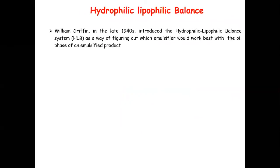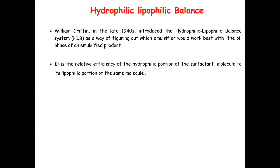Hydrophilic-lipophilic balance was first introduced by scientist William Griffin in the late 1940s as a way of figuring out which emulsifier would work for the oil phase of an emulsified product. It is the relative efficiency of the hydrophilic portion of a surfactant molecule to its lipophilic portion — how much hydrophilic groups and how much lipophilic groups are there. Based on this ratio, the HLB number of that particular surfactant is determined.